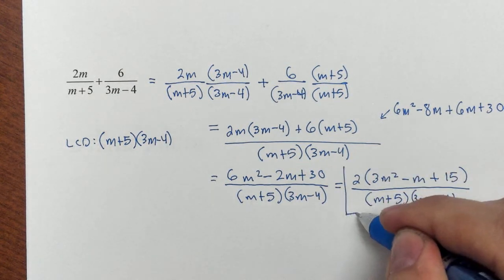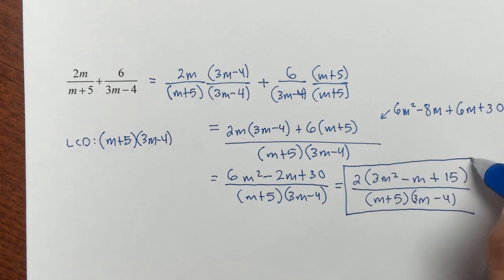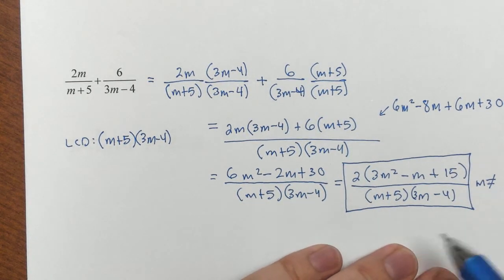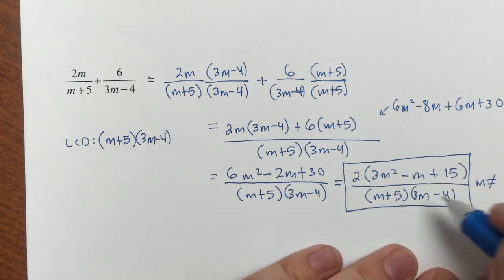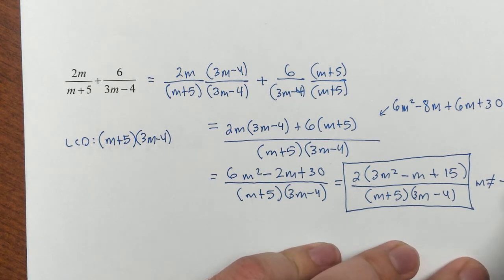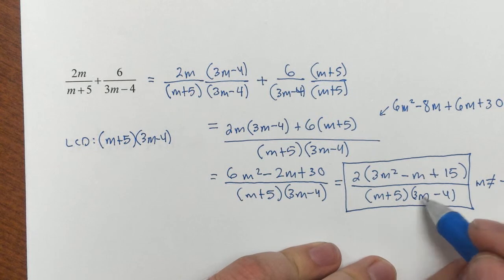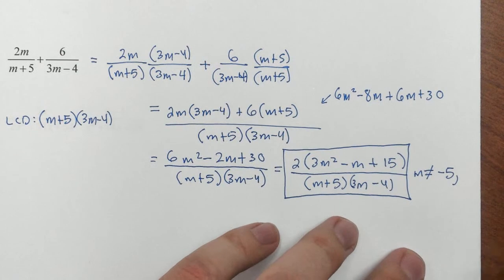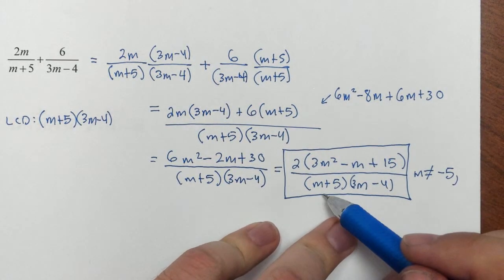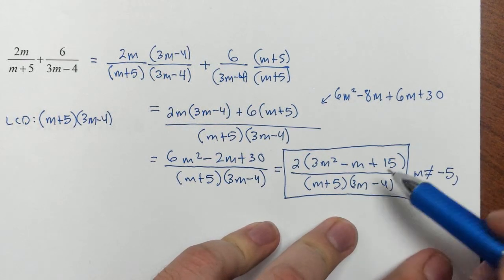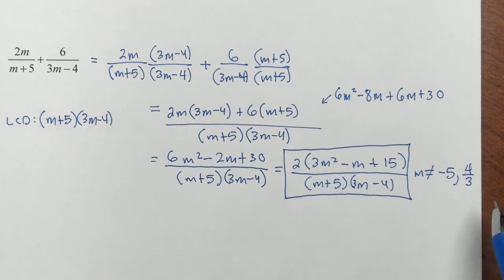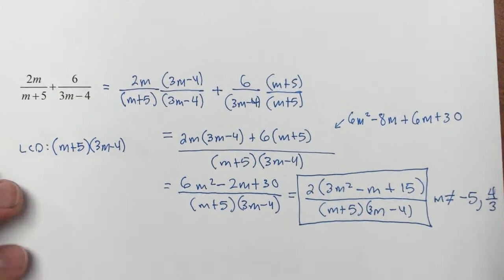This is my final answer. I'll write down my restrictions. My variable is m, and based on the denominator: if m+5 = 0, then m = −5, so m cannot equal −5. And if 3m−4 = 0, that gives m = 4/3, so m cannot equal 4/3. Each of those would give a denominator of 0, which we can't have.